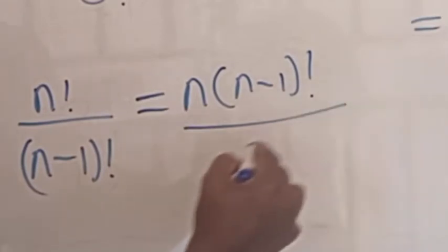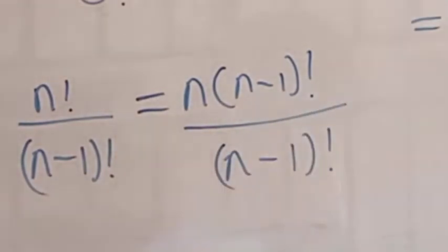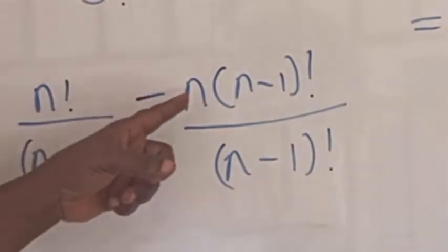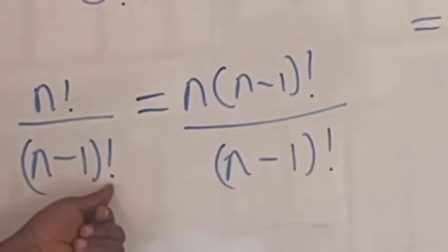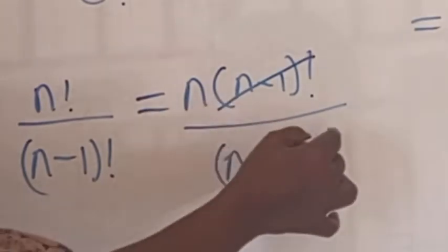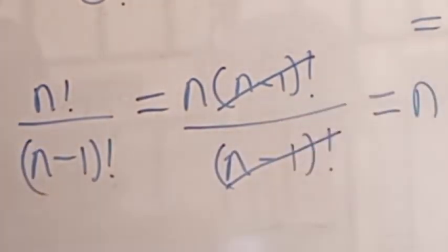Another example: n factorial over n minus one factorial. Since n minus one is less than n, n minus one factorial is a factor of n factorial. So n factorial equals n times n minus one factorial. We write n factorial over n minus one factorial as n times n minus one factorial, over n minus one factorial. Canceling, we are left with n.